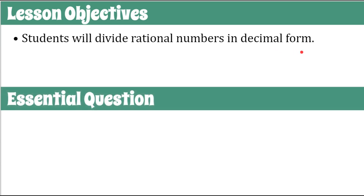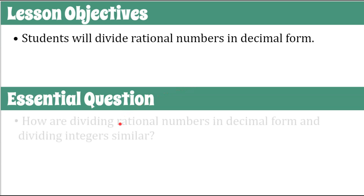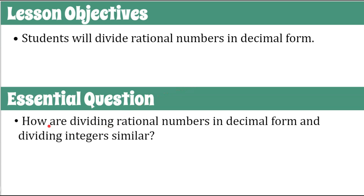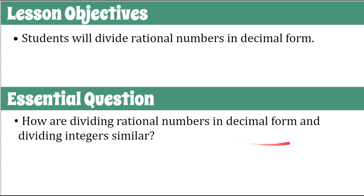The question to think about today is: how are dividing rational numbers in decimal form and dividing integers similar? Integers are whole numbers and their opposites — they're rational numbers too — but decimals aren't integers, though they are rational numbers. So rational numbers in decimal form means we're going to have positive and negative decimals.